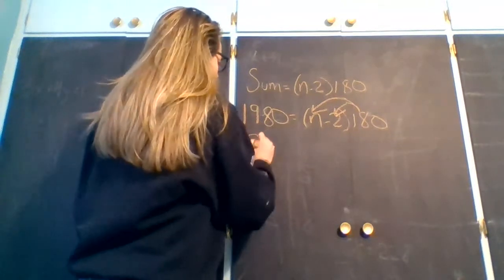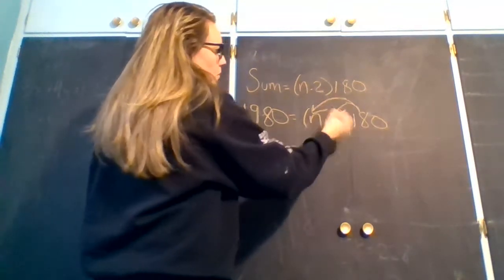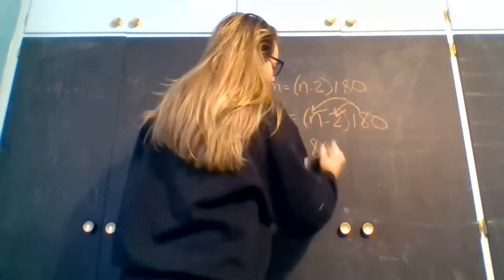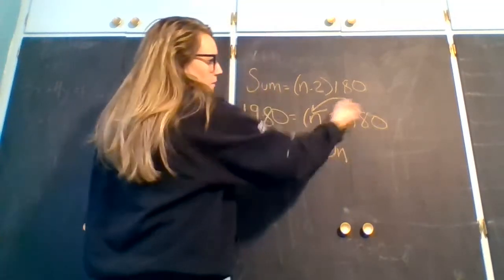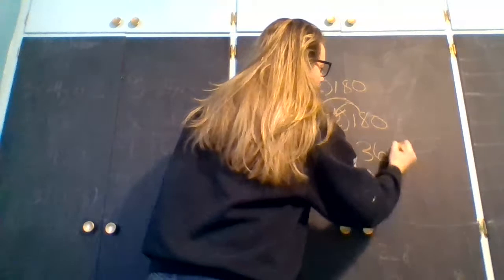So we're going to have 1,980 equals, we need to do 180n, or 180 times n, which is going to give me 180n, and then 180 times negative 2 is going to give me a negative 360.